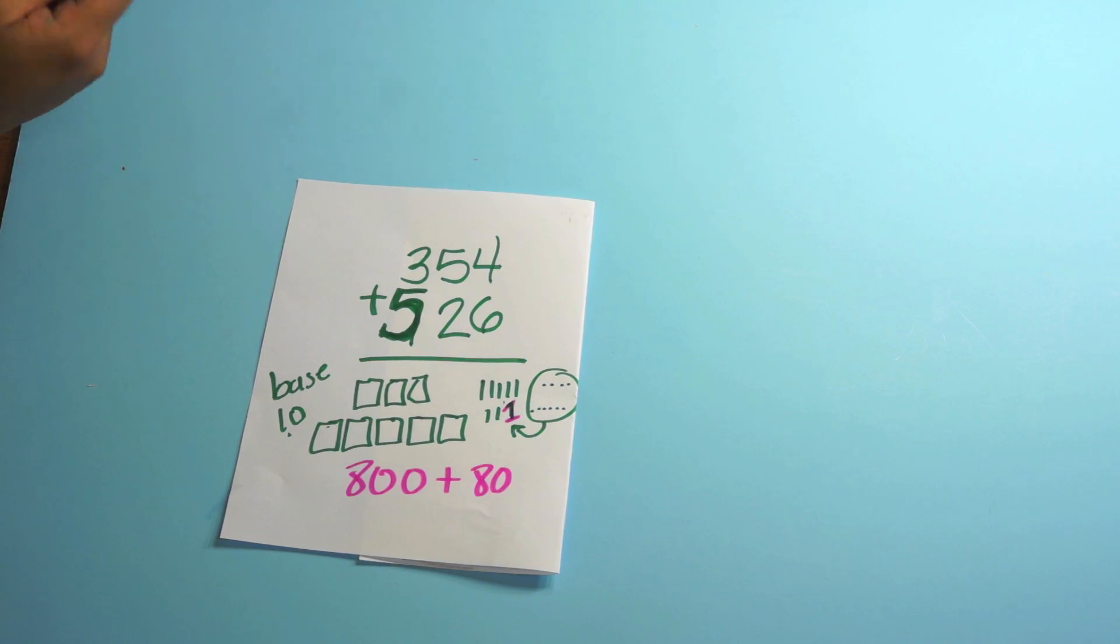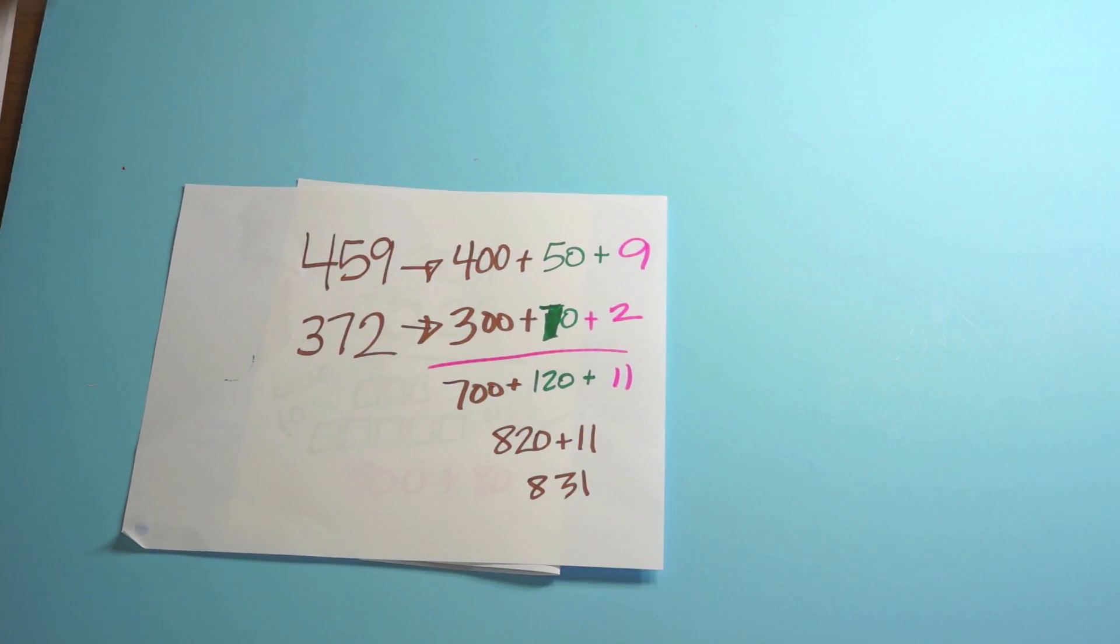So they draw out 354 and they draw out 526. And then they group those ones together and they make that into a 10. And now we're left with 800 plus 80. That's one strategy that they absolutely have to know. It's a named strategy in the mathematical progressions.